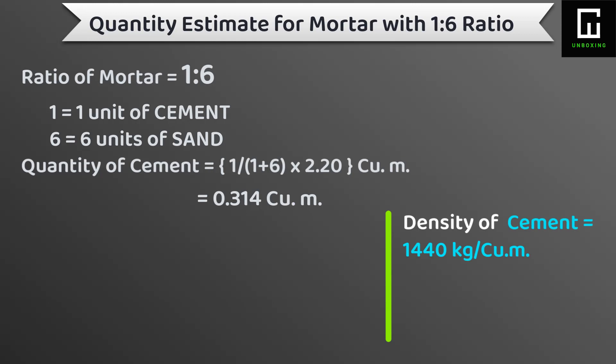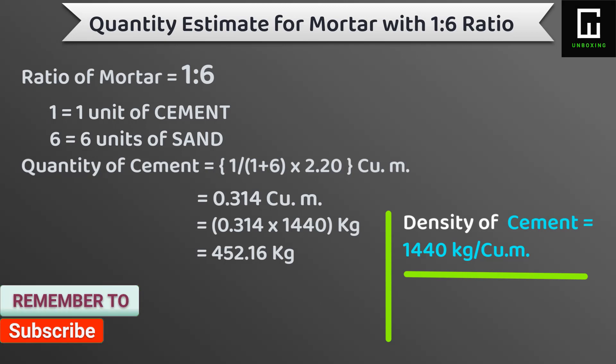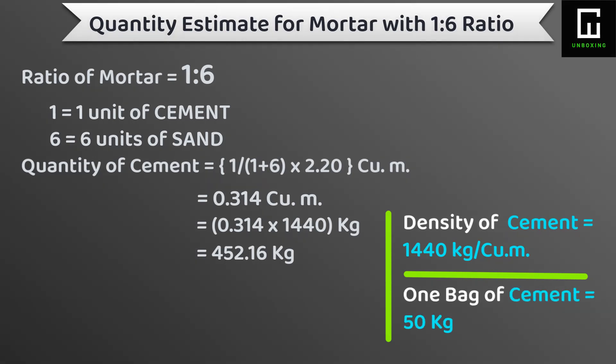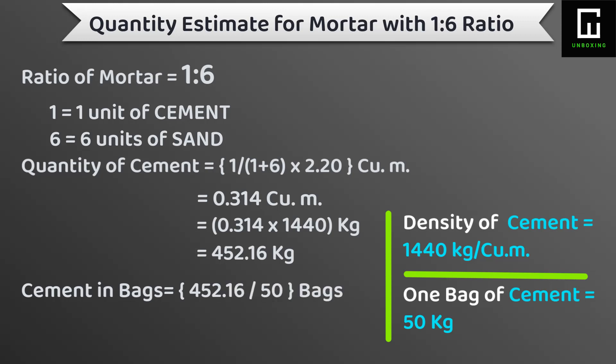As we know, density of cement is 1440 kg per cubic meter. That density has to be multiplied with the value 0.314 m³. So we get the quantity of cement in kg which is equal to 452.16 kg. As we know, one bag of cement equals 50 kg. So dividing 452.16 kg by 50 kg, we get 9.04 bags. Roughly we can say that 9 bags of cement is required for 2.20 m³ dry volume of mortar with a 1:6 ratio.